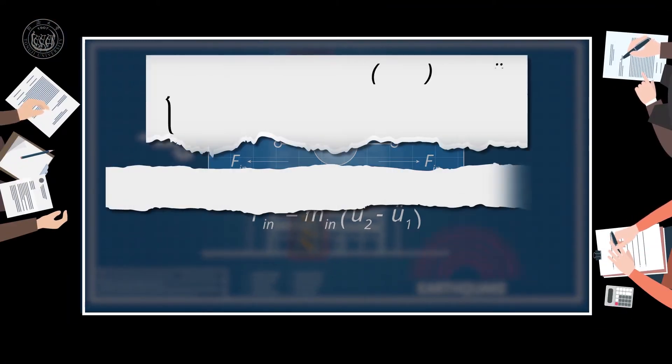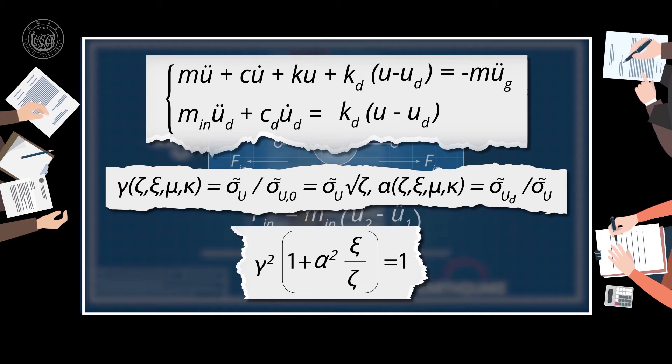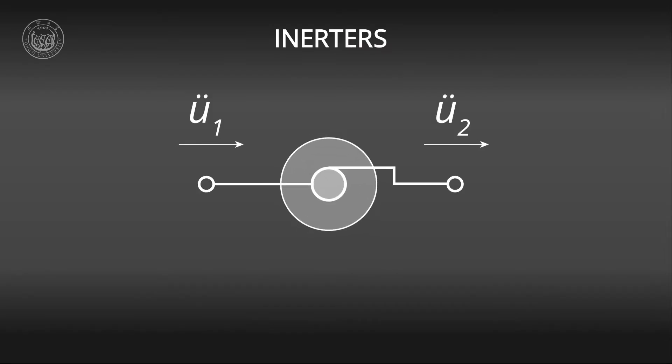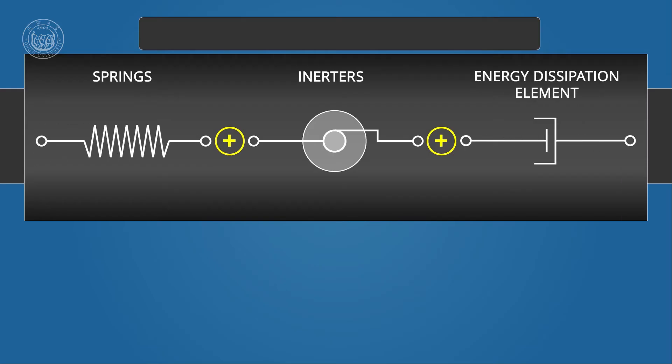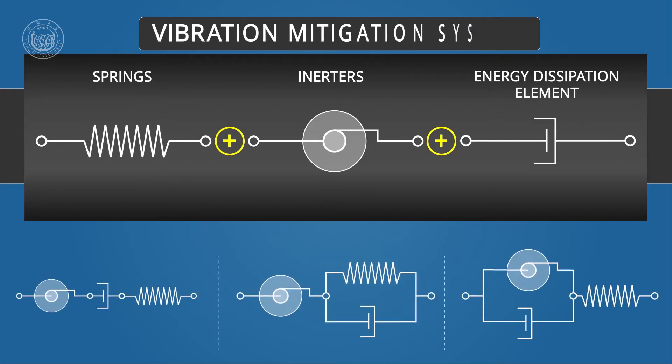Researchers have recently found an equation that reveals their operating principle in structure control applications. Inertors are elements that react with a force proportional to the relative acceleration of their two terminals. They can be combined with other mechanical elements such as springs and energy dissipation elements to produce vibration mitigation systems.